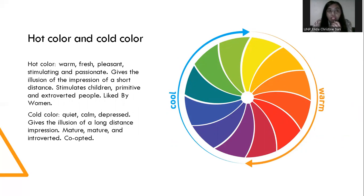We are learning about hot color and cold color. Hot colors are warm, fresh, pleasant, stimulating, and passionate. They give the illusion of short distance, and stimulate children, primitive, and extrovert people — liked by women. Cold colors evoke emotion of quiet, calm, and depressed feelings, give the illusion of long distance, with impressions of maturity and introvert character. Cool colors include purple, blue, and green. Hot colors include yellow, orange, and red.